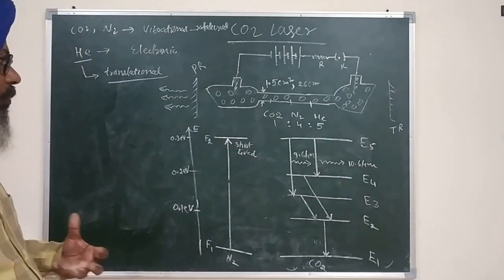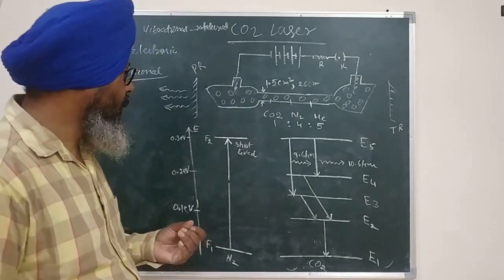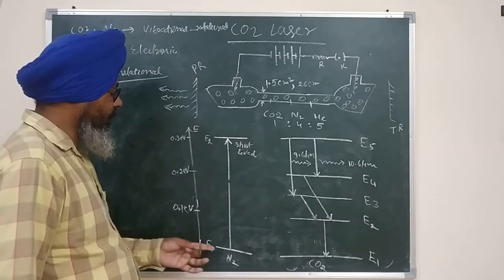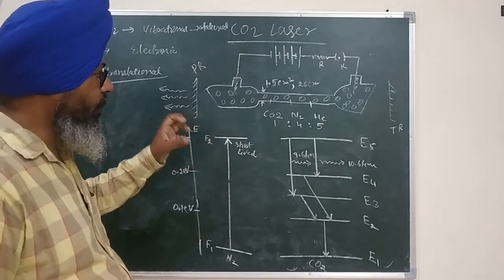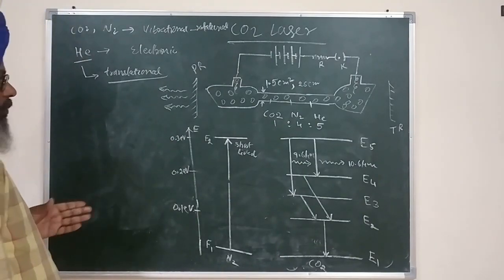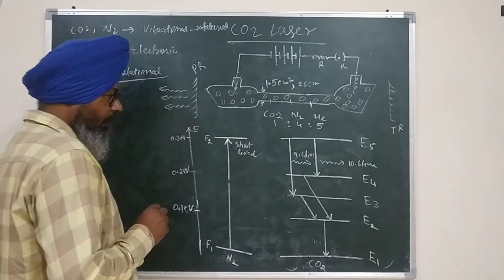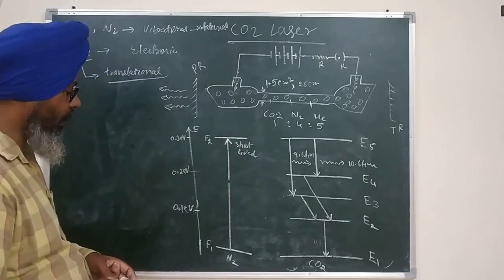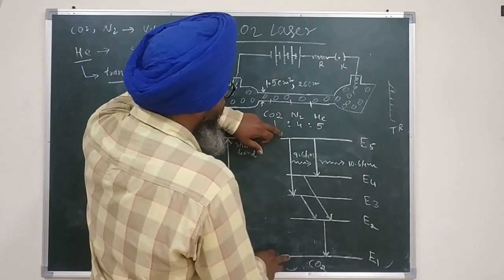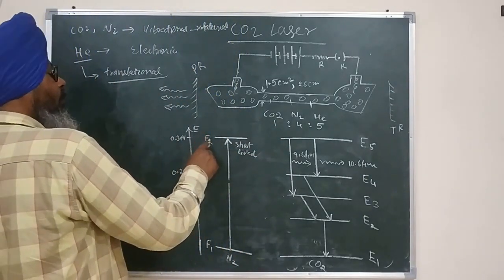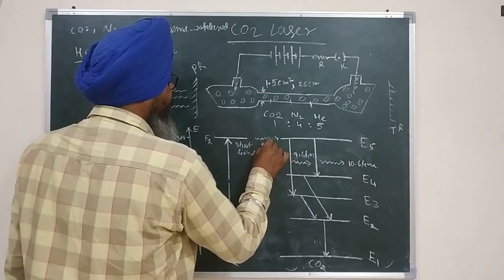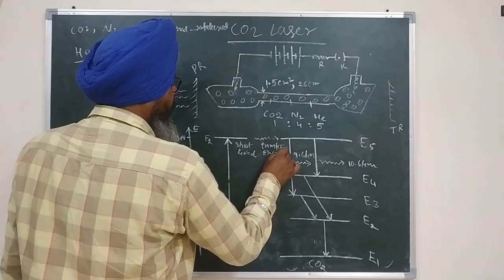The nitrogen molecules get energy from the electrons through collisions and are excited to the F2 state. However, the F2 state is short-lived, so these excited nitrogen molecules will collide with CO2 molecules. It is a coincidence — similar to the helium-neon laser — that the energy difference between F2 and F1 of nitrogen is approximately equal to the energy difference between E1 and E5 of CO2.